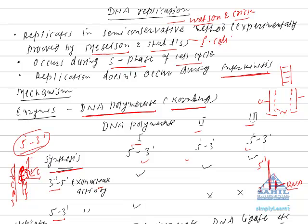After a new strand of DNA is formed, the RNA primer has to be removed. This removal is carried out by the 5'-3' exonuclease activity. This activity is found in DNA polymerase 1, but is not found in DNA polymerase 2 or DNA polymerase 3.